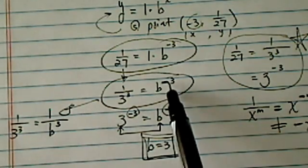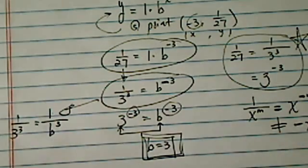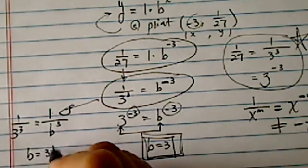That's how I get rid of the negative exponents. And from here, one and one is equivalent, cube and cube is equivalent. So, therefore, B has to equal to three.